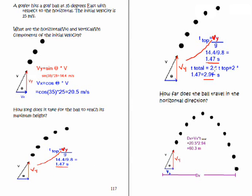So if we double that we get our total time. So that would give you about 2.94 seconds. So our final answer comes out to be 60.3. The DX, which is our range, would be 20.5 times 2.94, and again the answer comes out in meters.